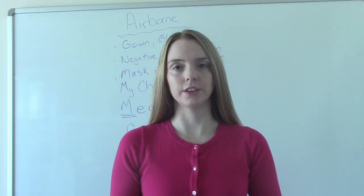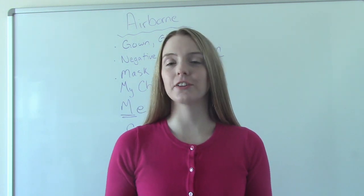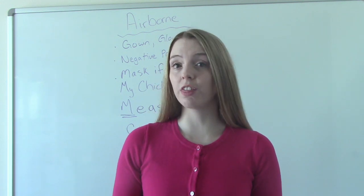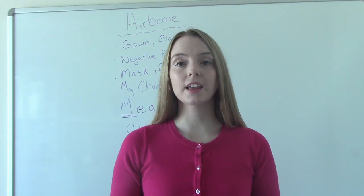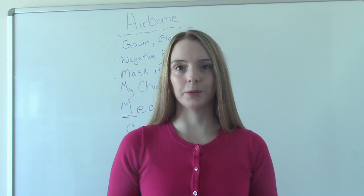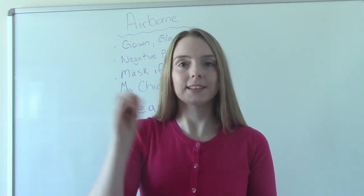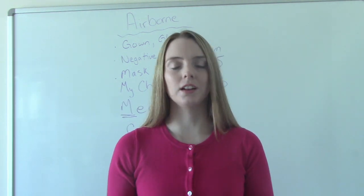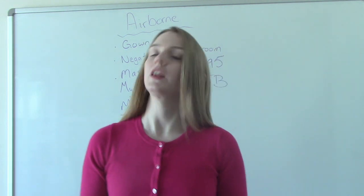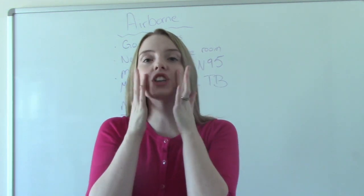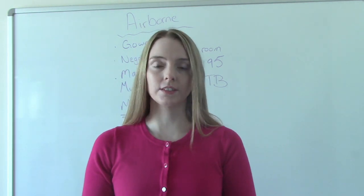Now let's talk about airborne isolation. If your patient is on airborne isolation, you still need your gown and gloves, and they still need to be in a private room. But for airborne isolation, especially if your patient has tuberculosis, you need to wear an N95 mask and they'll be in a negative pressure isolation room. The N95 is a special mask you need to be fitted for to ensure it fits securely on your face — you check the seal to make sure it's not too big or too small.